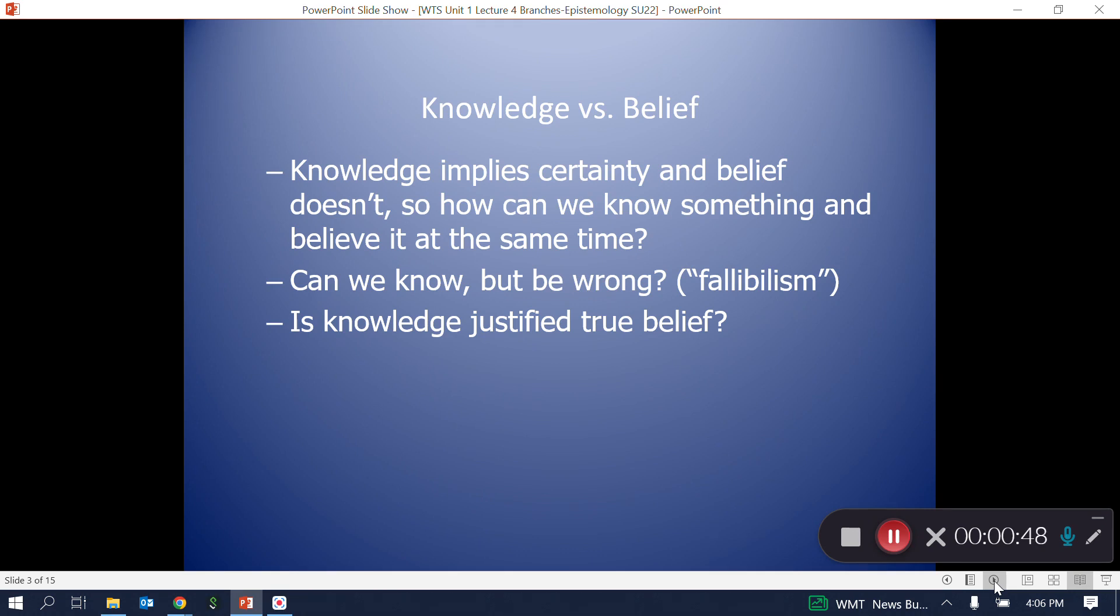So it's apparent that knowledge and belief are different. But if they're different, how can we know something and believe it at the same time? That seems to imply that I am both certain of it and not certain of it at the same time. Perhaps it's possible to know something, but be wrong. That theory is called fallibilism, and it insists on just that. But again, that seems odd to say that I know my name is Christopher, but I could be wrong.